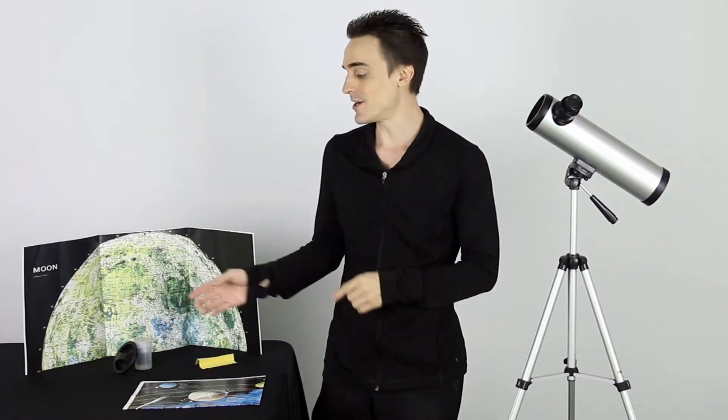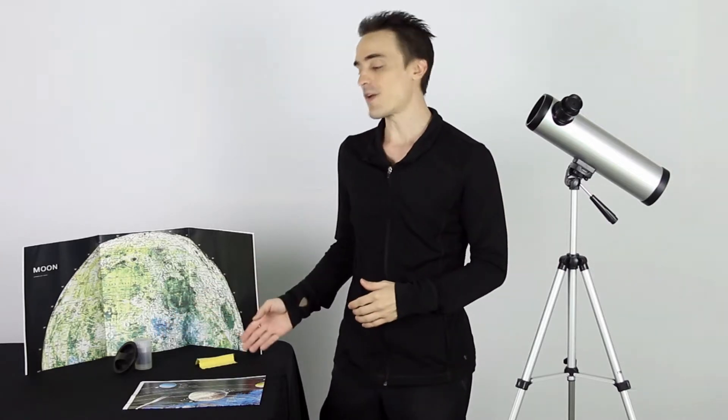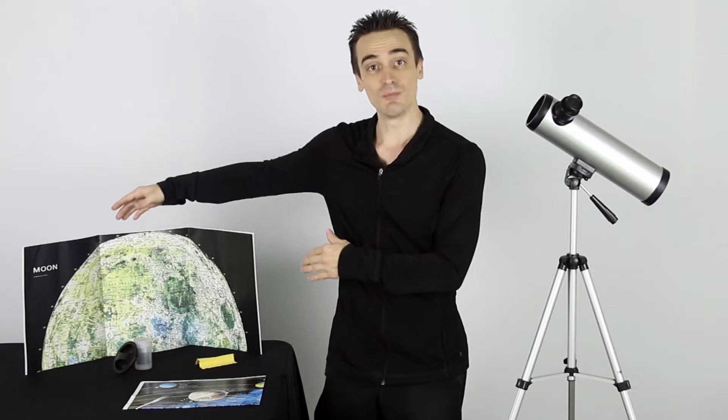Also included is a dust cap for the main telescope tube here, and a microfiber cloth to help clean your lenses, and you'll also receive this large moon poster and a solar system poster with your purchase.